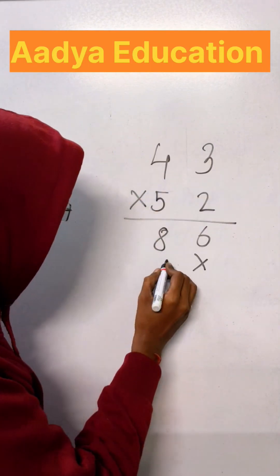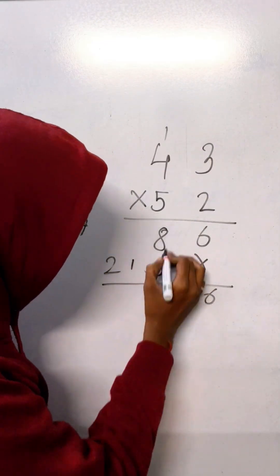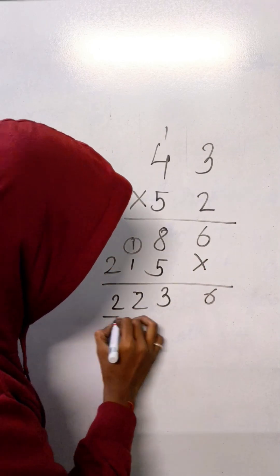3 2s are 6, 4 2s are 8, 5 3s are 15, 5 4s are 20 and 21. 8 plus 5 is 30, 1 plus 2 is 2 and this is 1.